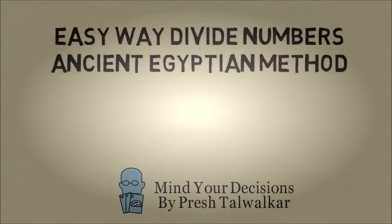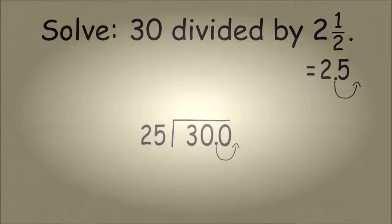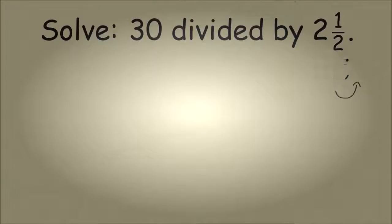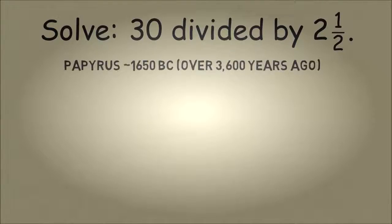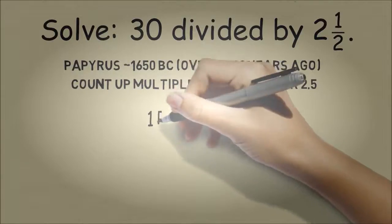This is Presh Talwalkar. In this video I'm going to teach you an easy way to divide numbers that's known as the ancient Egyptian method. Let's return to our problem and forget everything that you've learned in school. I'm going to teach you how the ancient Egyptians did this around 1650 BC, which was over 3,600 years ago. This problem is documented on a papyrus, and the method they used is they counted up multiples of the divisor 2 and a half.